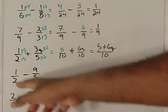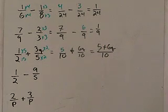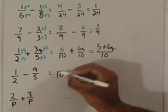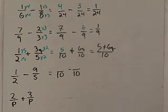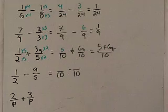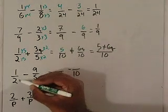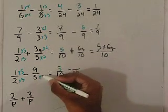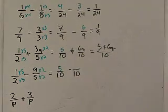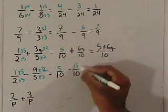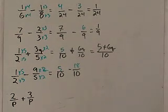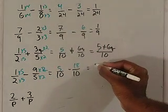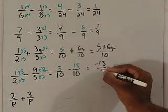How about 1 half minus 9 fifths? Well, we just did 2 and 5 a second ago, so we know we're going to be looking for a fraction with 10 in the denominator. What times 2 gives us 10? 5. So 1 times 5 is 5. And 5 times 2 gives us 10, so 9 times 2 is 18. So 5 over 10 minus 18 over 10 would be negative 13 over 10.